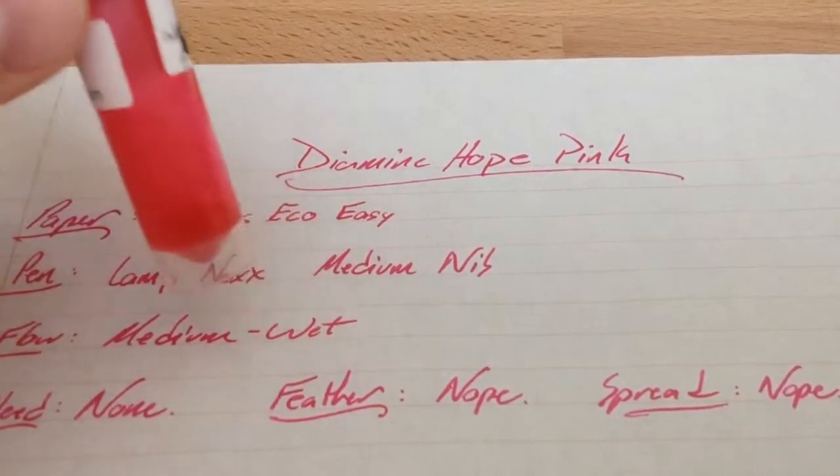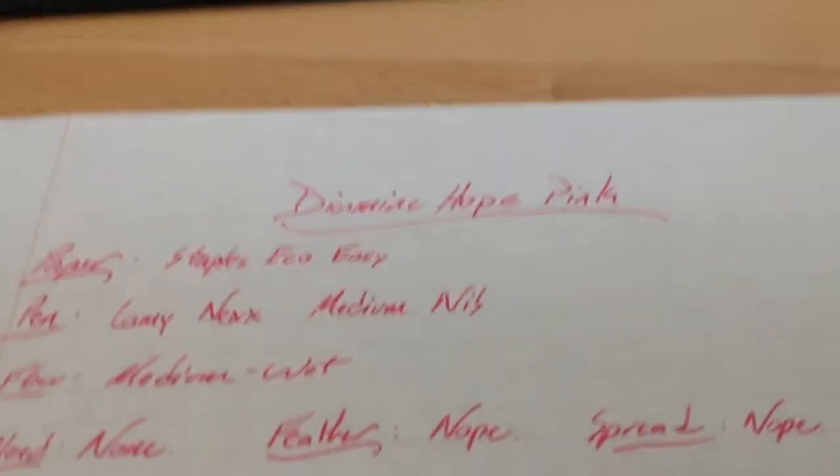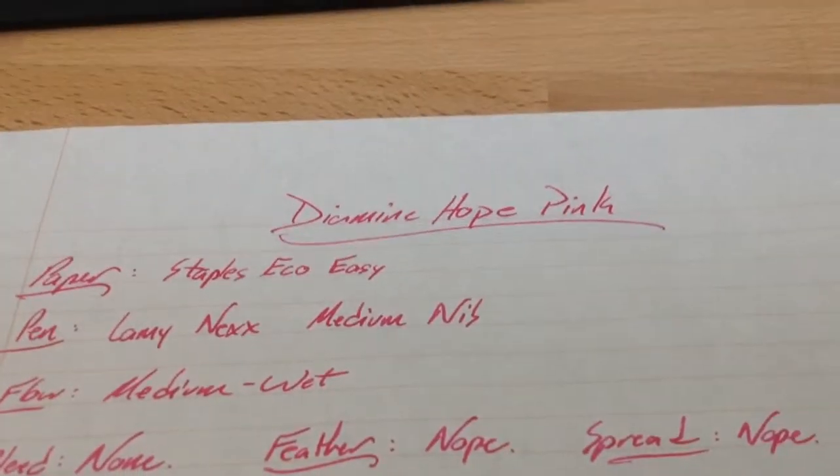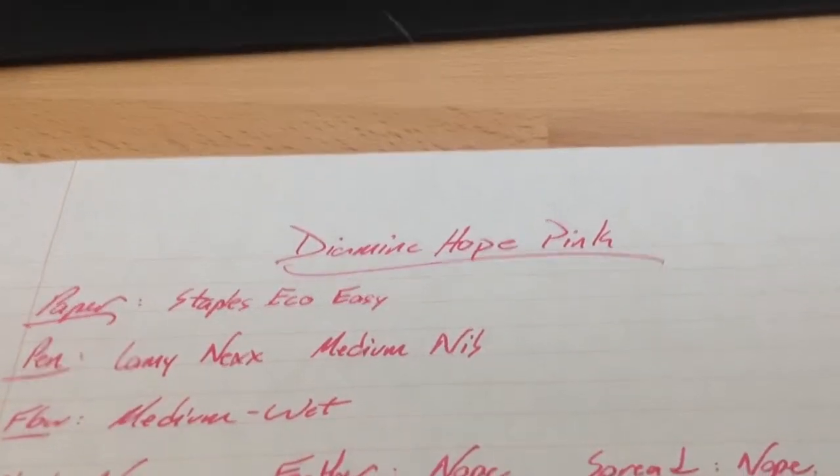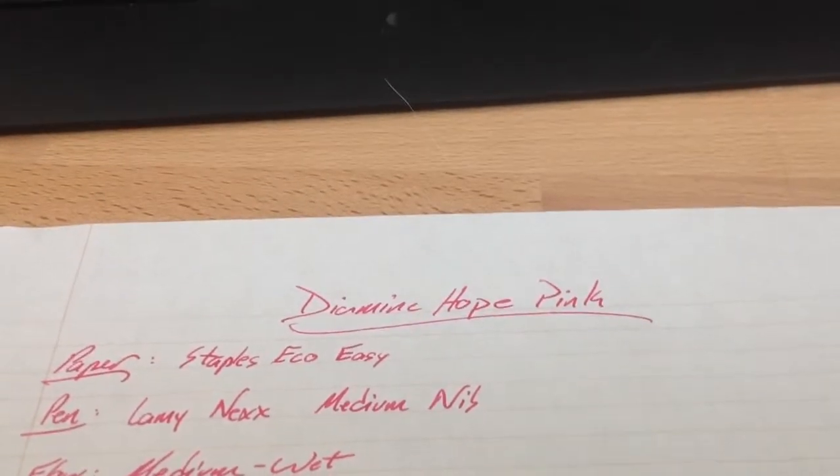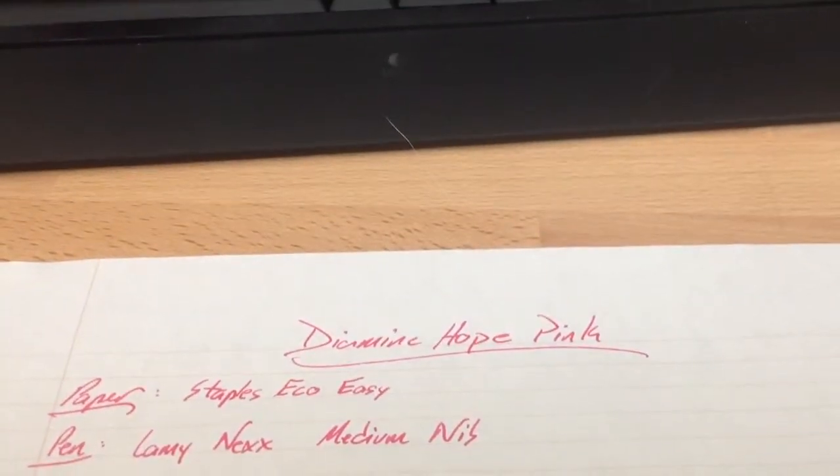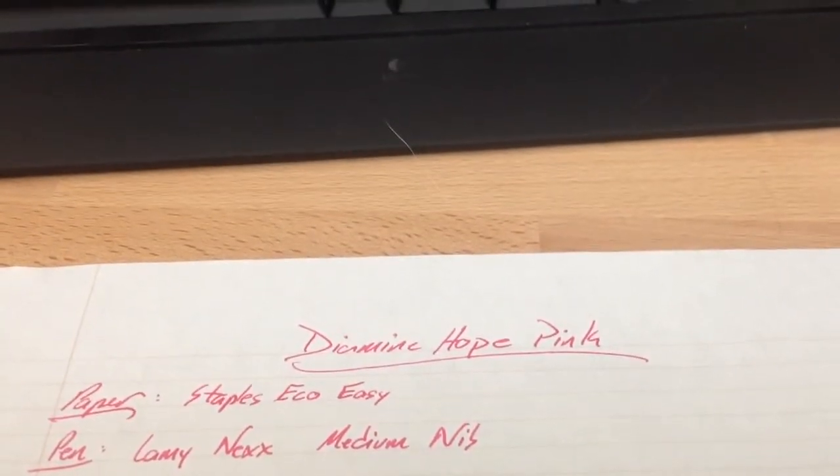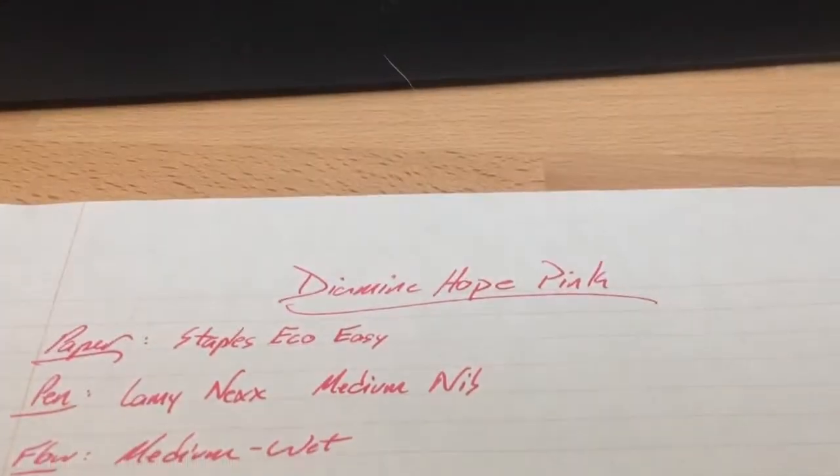I remember it had Chocolat from Private Reserve. What else did I have in there? Maybe there's Purple Hearts, and this Hope Pink, of course, and Black Swan and Australian Roses. That might be it. Oh, and Waterman's Red. I haven't used very many of these, oddly enough.